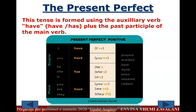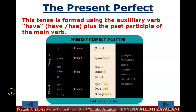We also have contracted forms of the pronoun with have: I've, you've, he's, she's, it's, you've, we've, they've. So you can use either the full form — 'I have' — or the contracted form — 'I've.'